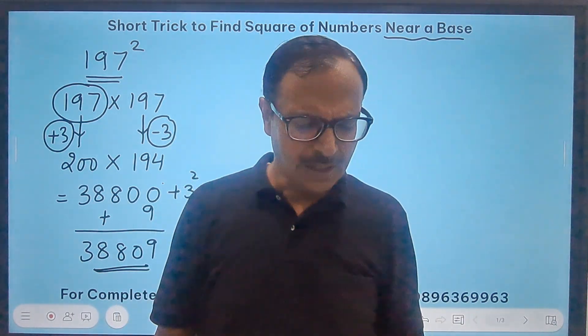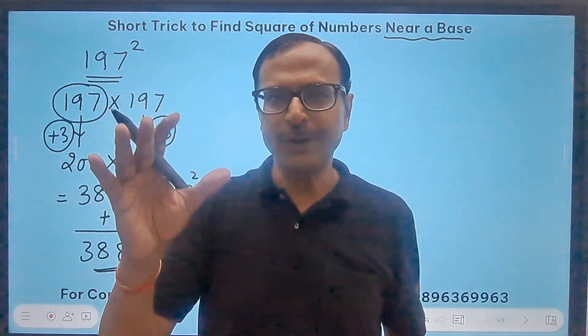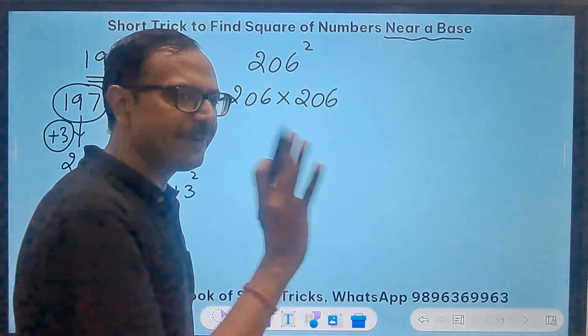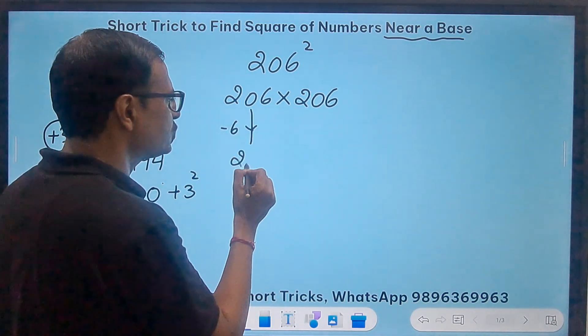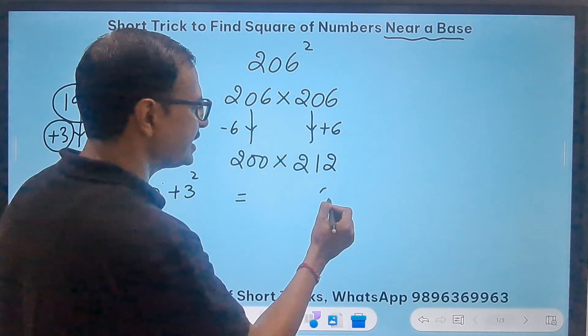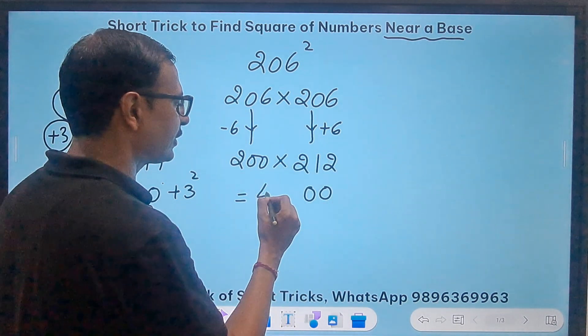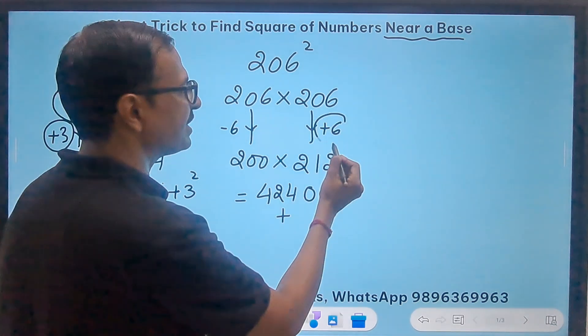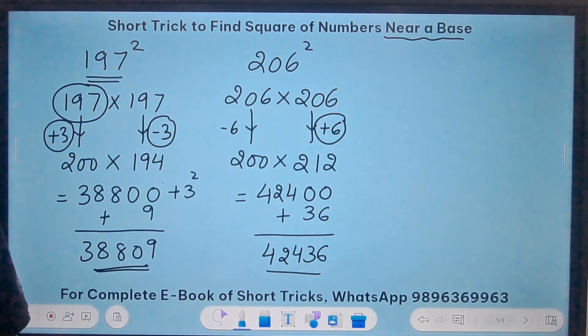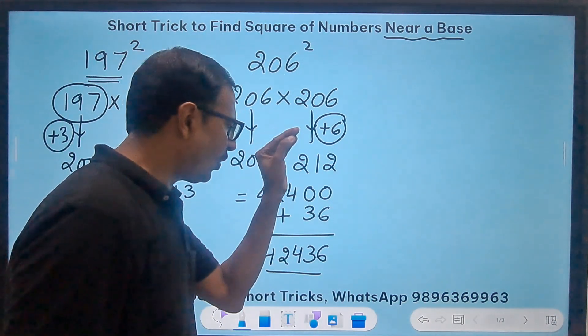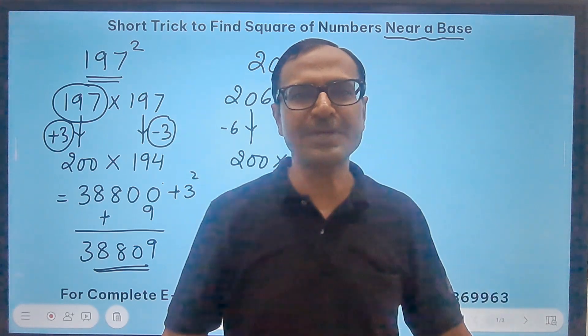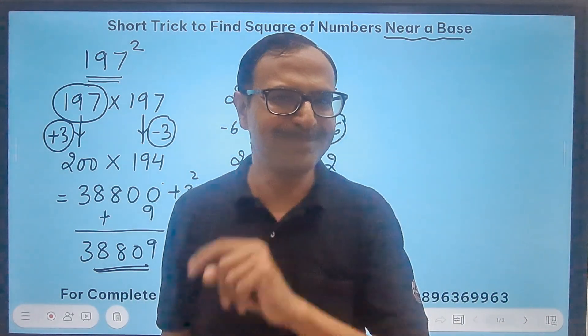So I will take one more number very close to 200, but this time it will be more than 200. How about taking 206 square? So this is 206 times 206. Now if I reduce this by 6, this will become 200. But in that case, I will have to increase this by 6. This becomes 212. Now multiply these two: 0, 0, 212 and double is 424. And what to add to this? This number square, that is 36. And now 42,436 happens to be the square of 206.